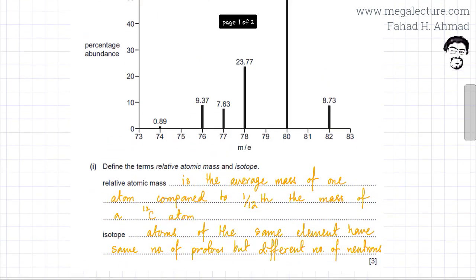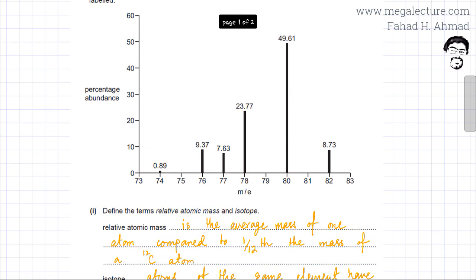So previously I was given a graph where the percentage abundances were given. For example, this isotope over here having a mass to charge ratio of 80 had the percentage abundance of 49.61%. So I'm going to multiply the two values and sum up the products and divide that by 100. That would give me the average relative atomic mass of all the isotopes.